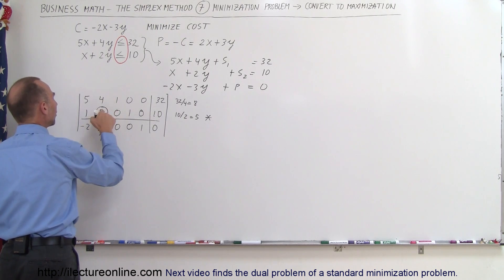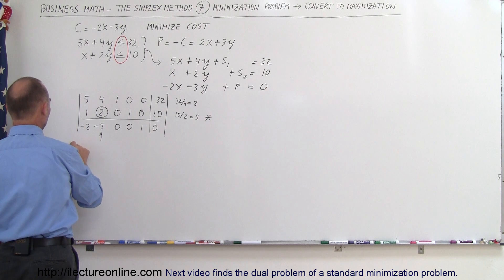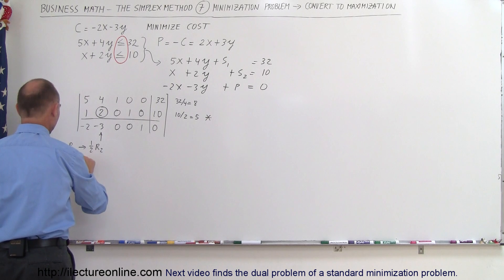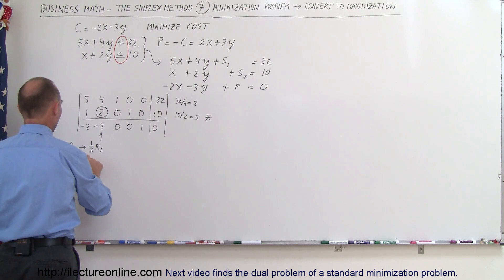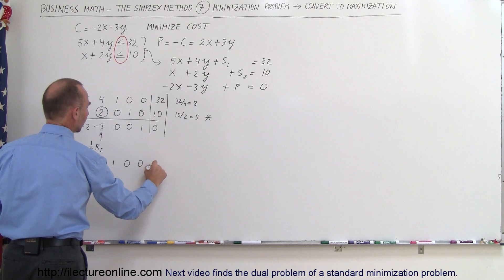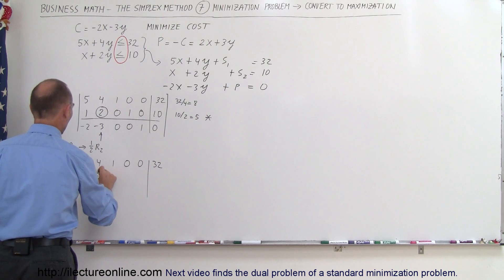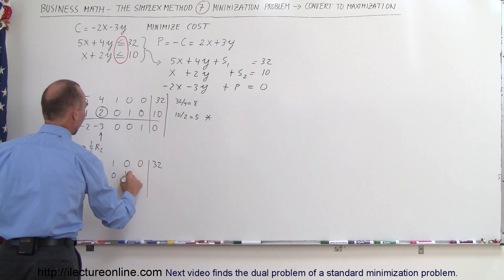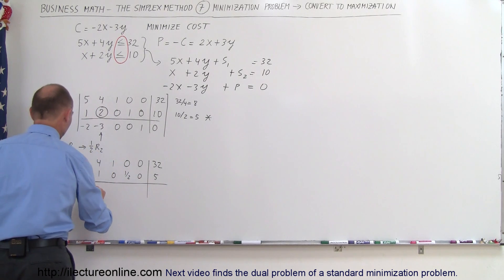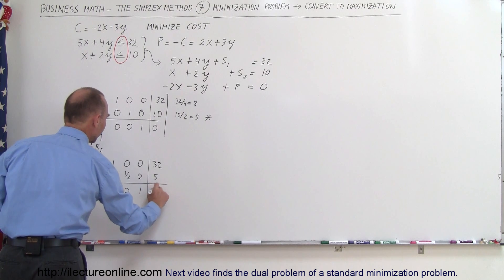We start with this pivot element and want to turn it into a 1. That means we take the second row R2 and replace it by one-half times R2. Everything else stays the same. So row 1 stays as: 5, 4, 1, 0, 0, 32. Row 2 becomes: 1/2, 1, 0, 1/2, 0, and 5. And the bottom row stays as: minus 2, minus 3, 0, 0, 1, and 0.